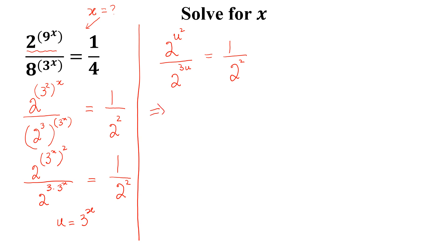Now we can write this as 2^(u^2 - 3u) equal to 2^(-2).